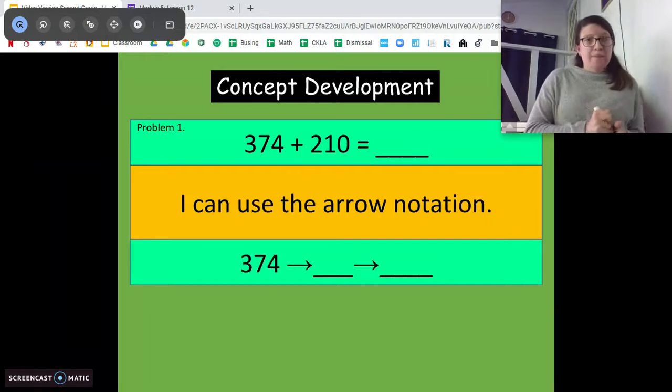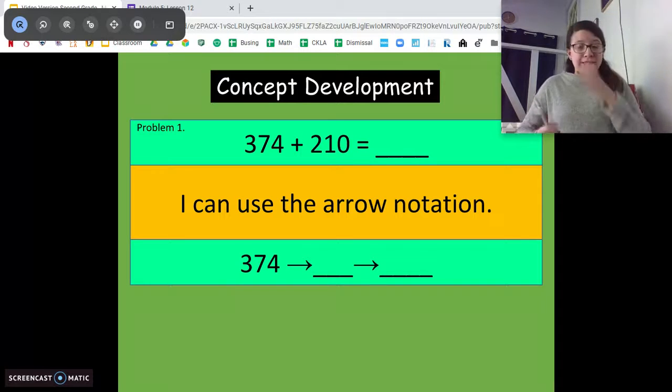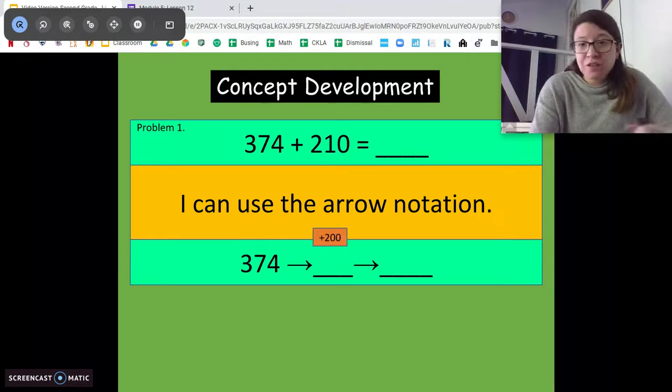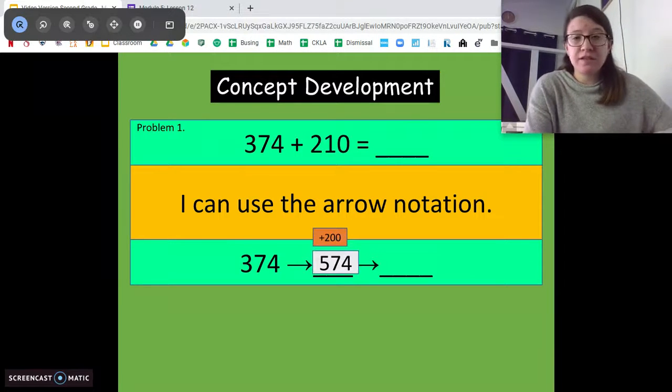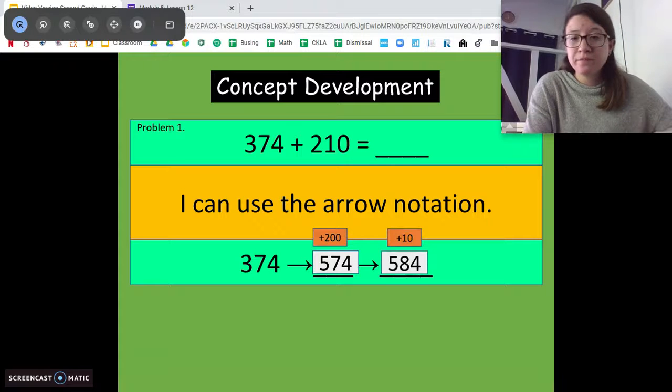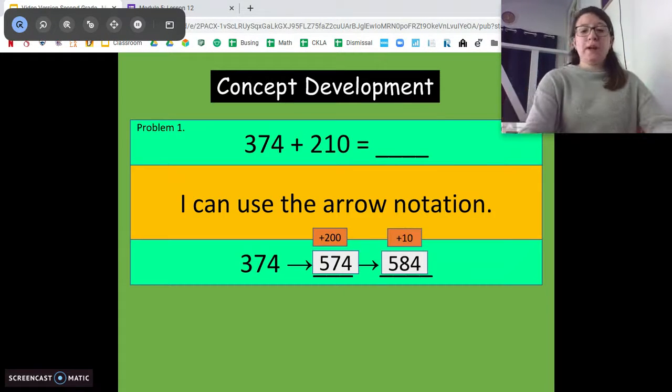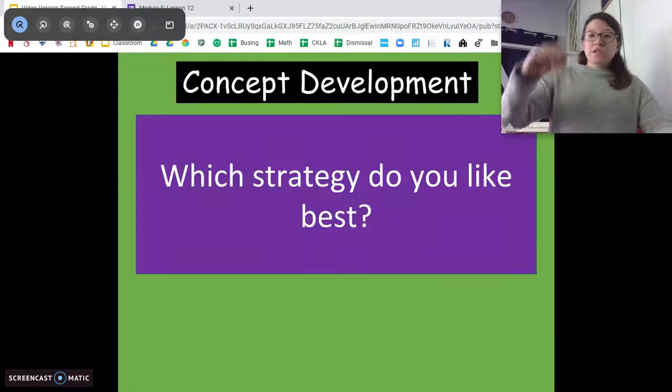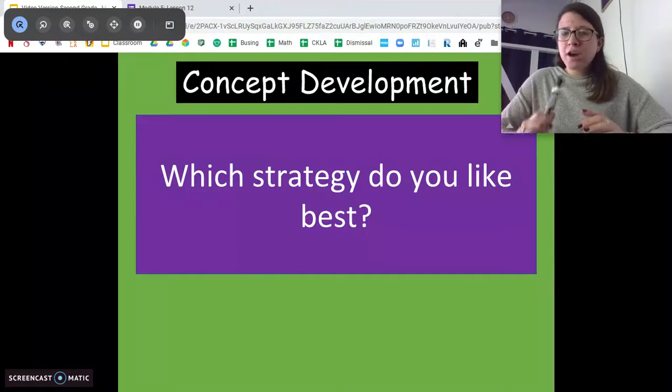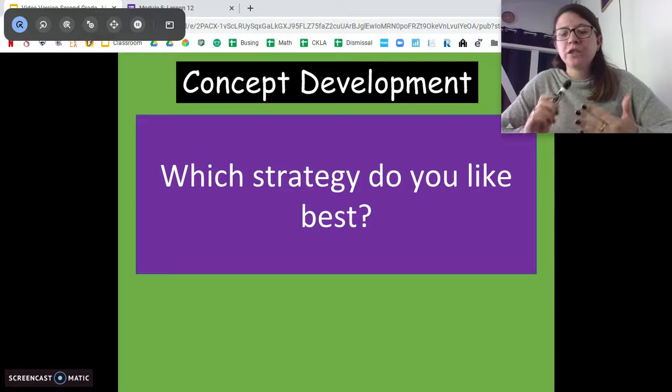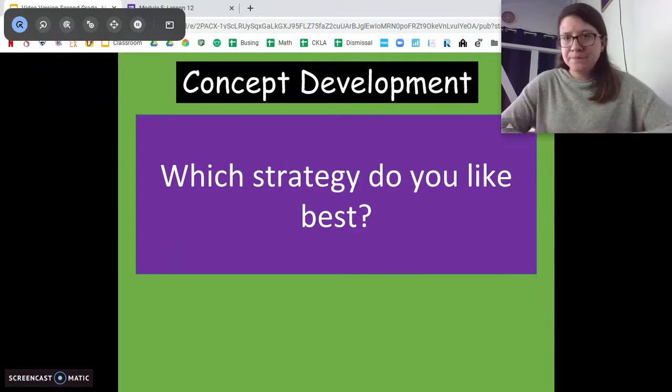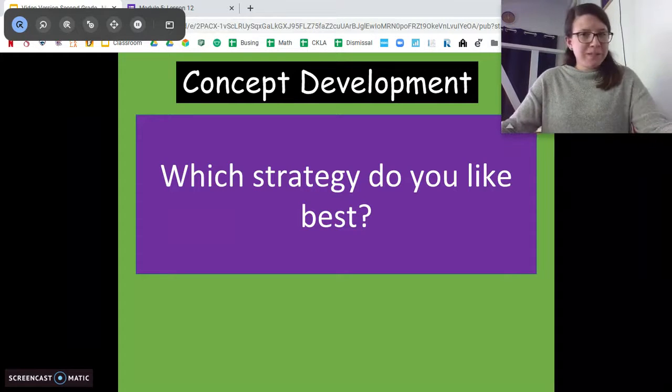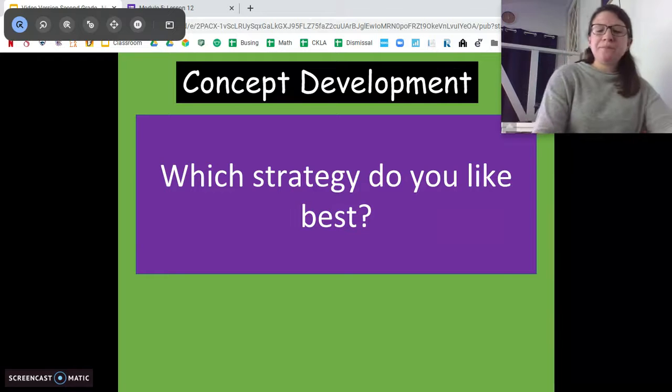Another way to do is the arrow way. So when we do the arrow way, there's a couple different ways to do it, but we're breaking down the number and adding chunks at a time. So we're going to add that 200 first, right? Just like we did in the mental math. We get 574 and then we still have the 10 more. 584. Same answer, just a different way. Which strategy do you like best? Pause and turn and talk to someone at home. Which strategy do you like best? Totally doesn't matter to me. Everybody's brain is different. Whatever strategy works for you is awesome.